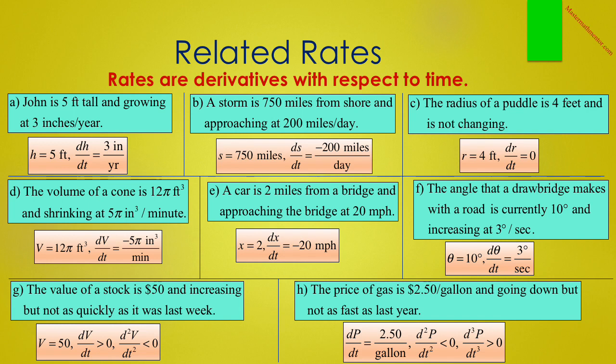But if it's not going down as fast as it was last year, that means the rate of change is less negative, which means it is positive. So the rate of change of the second derivative — which is the third derivative — is a positive number. So d³p/dt³ is greater than 0.